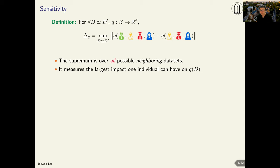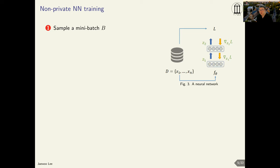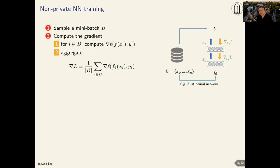Now let's look at the details of neural network training steps. First, we sample a mini-batch of size B from the input dataset. For each example in the mini-batch, we compute the per-example gradient. We then take the summation or average to obtain an aggregate gradient. Once we have this aggregate gradient, we use the gradient descent update equation to update the parameters of our neural network.